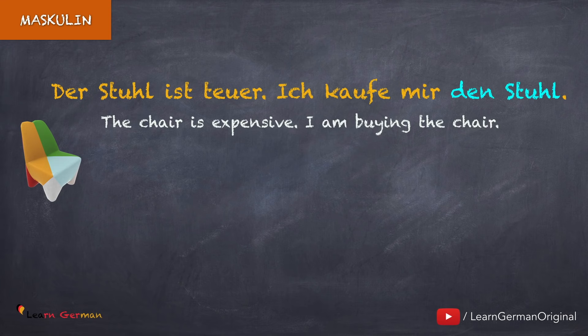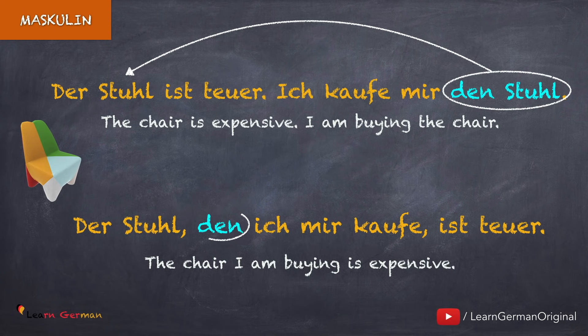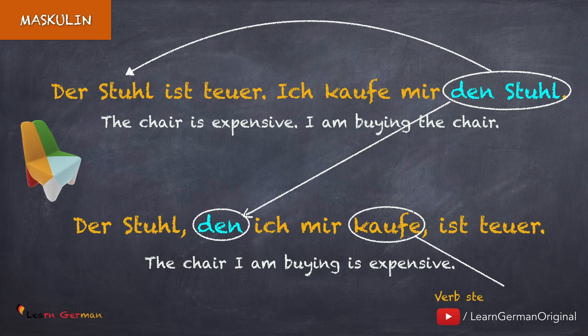Here is the next example: Der Stuhl ist teuer — ich kaufe mir den Stuhl. In dem zweiten Satz ist den Stuhl das Akkusativobjekt. Wenn wir einen Relativsatz bilden, dann sagen wir: Der Stuhl, den ich mir kaufe, ist teuer. Wir benutzen nicht den Stuhl, sondern nur den als Relativpronomen. Am Ende vom Relativsatz steht immer das Verb.